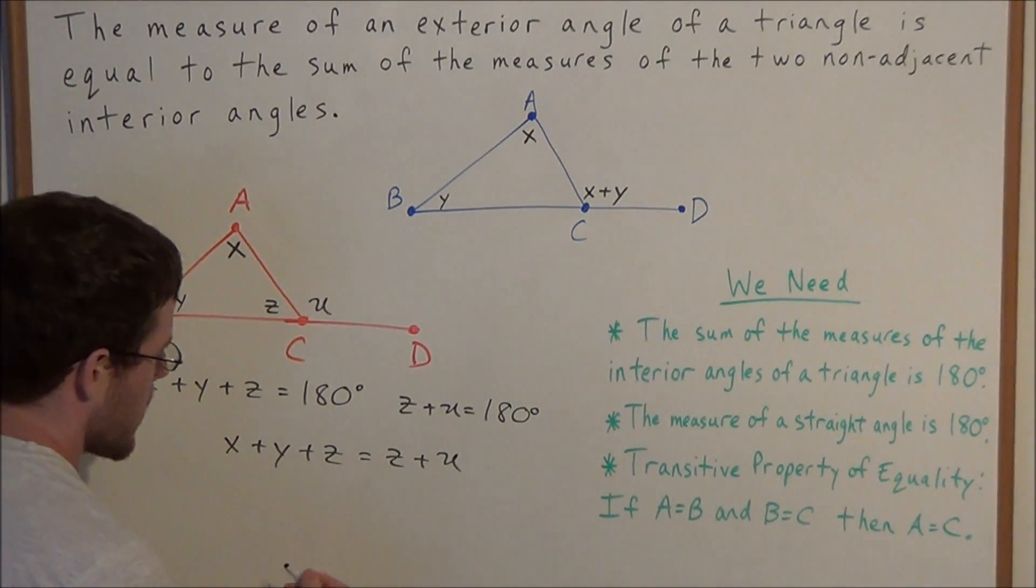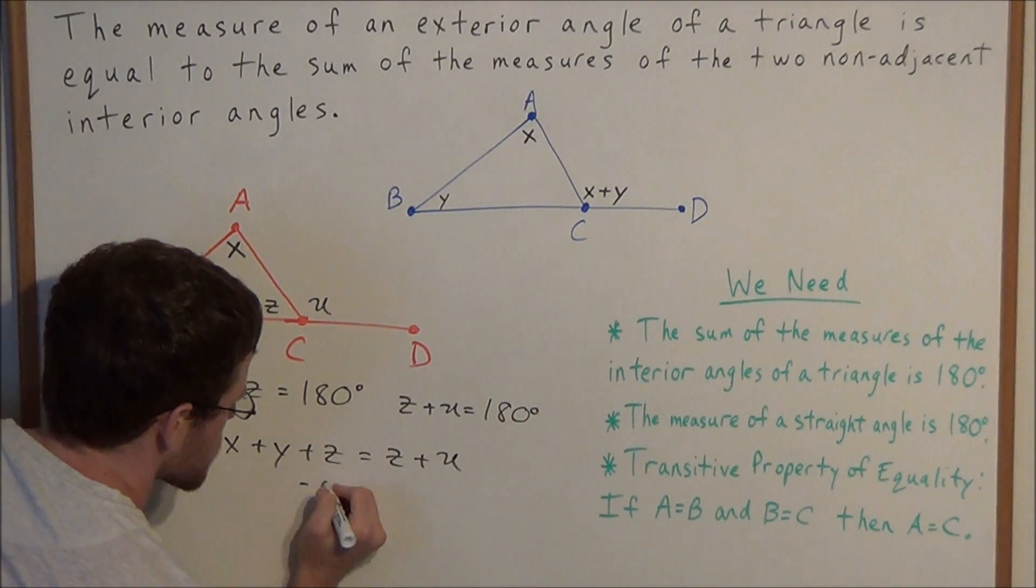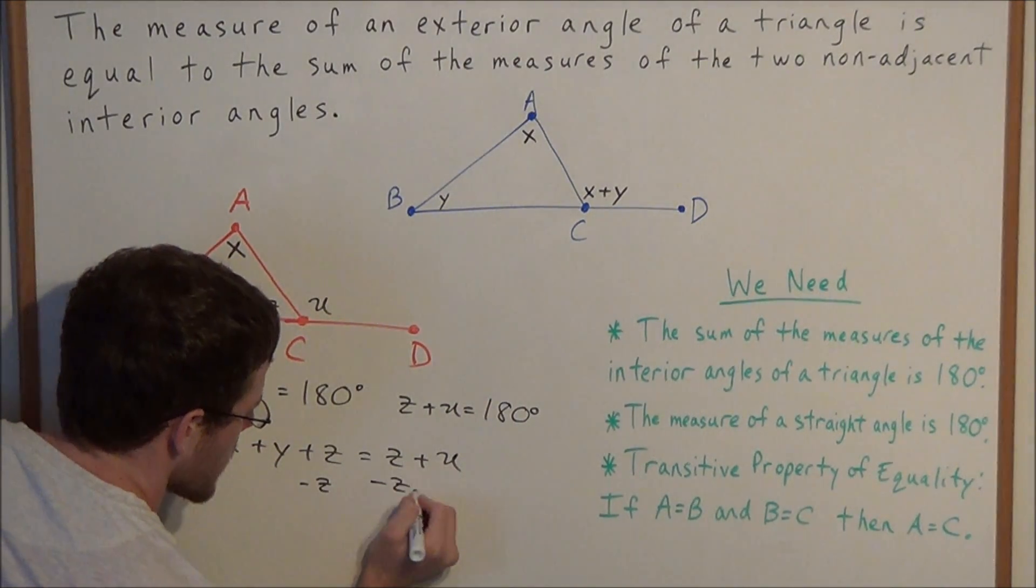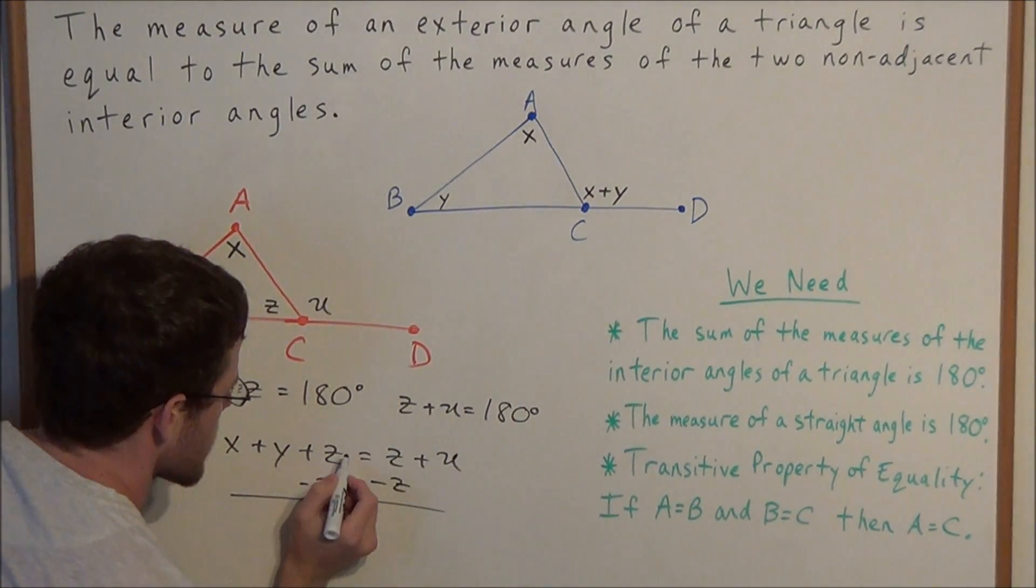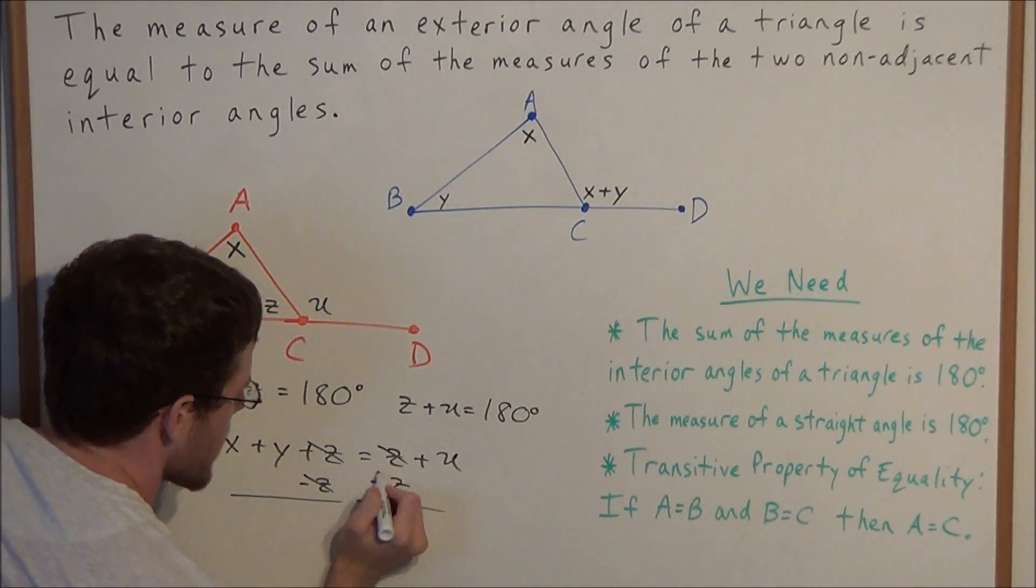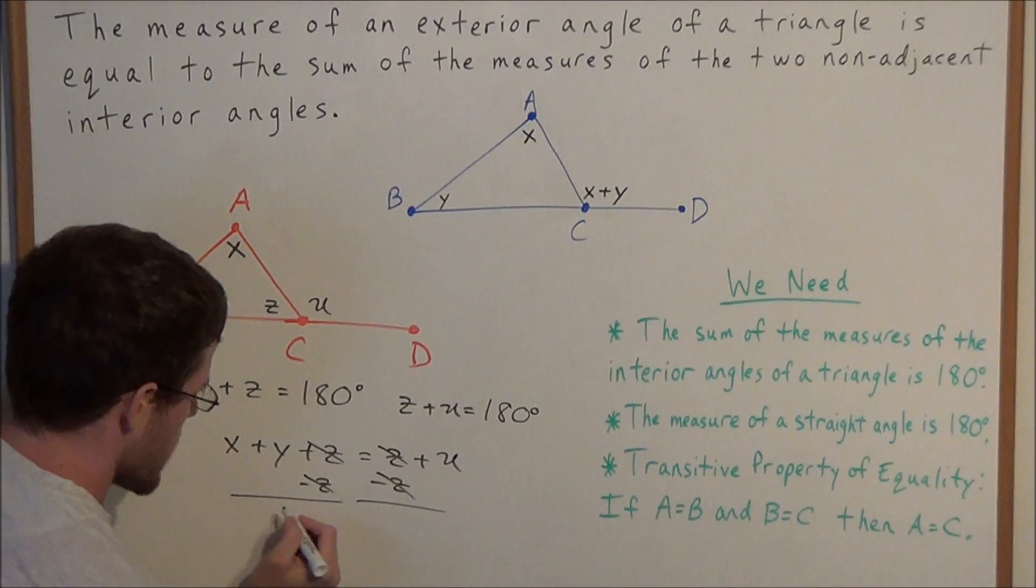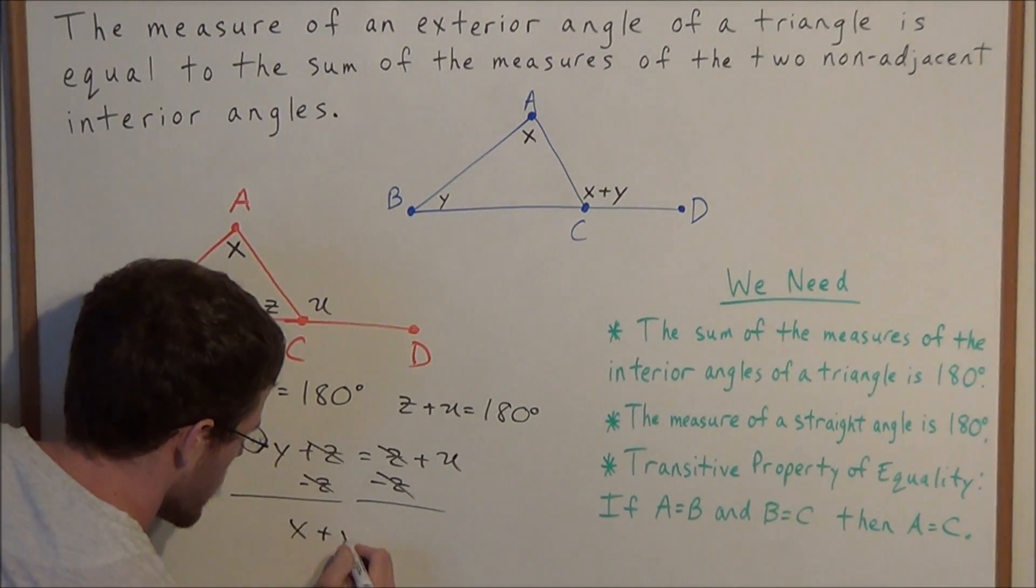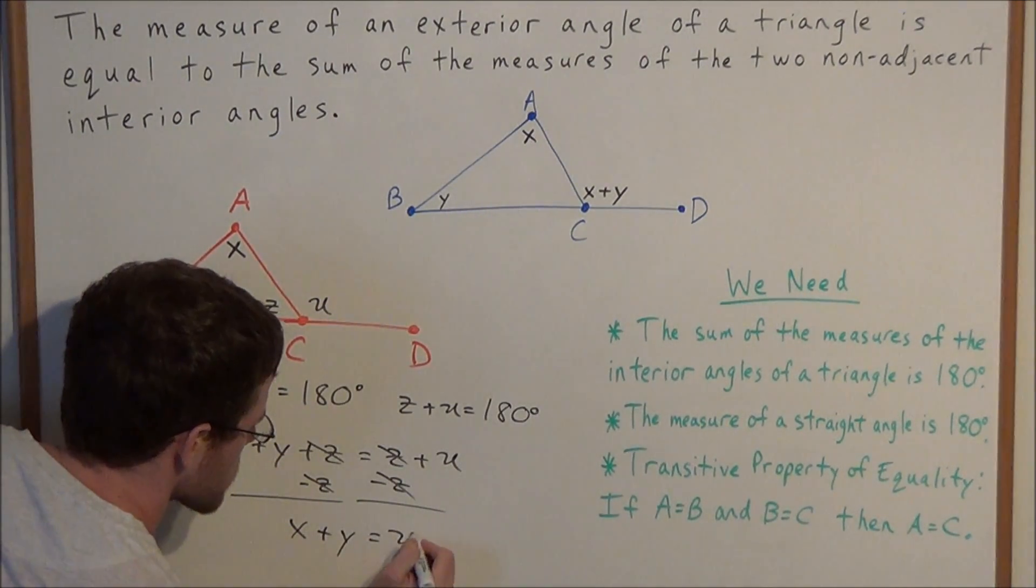Now we could simplify this equation. We could subtract Z from both sides. On the left-hand side, Z minus Z cancels, and on the right-hand side, Z minus Z also cancels. So now we're left with X plus Y is equal to U.